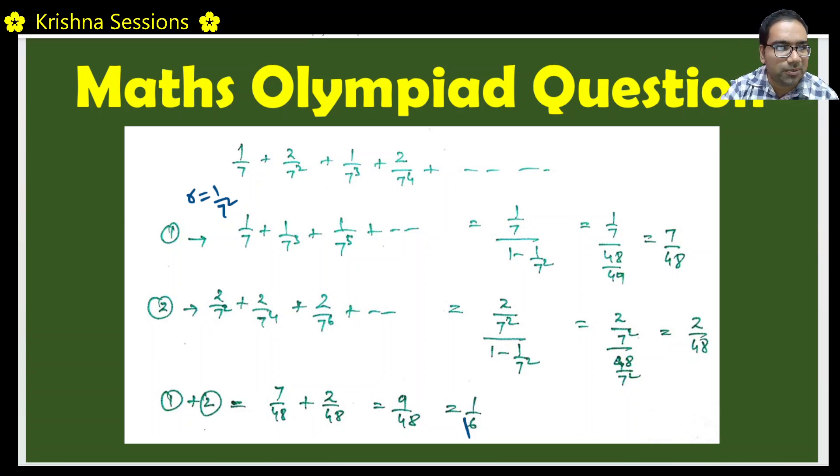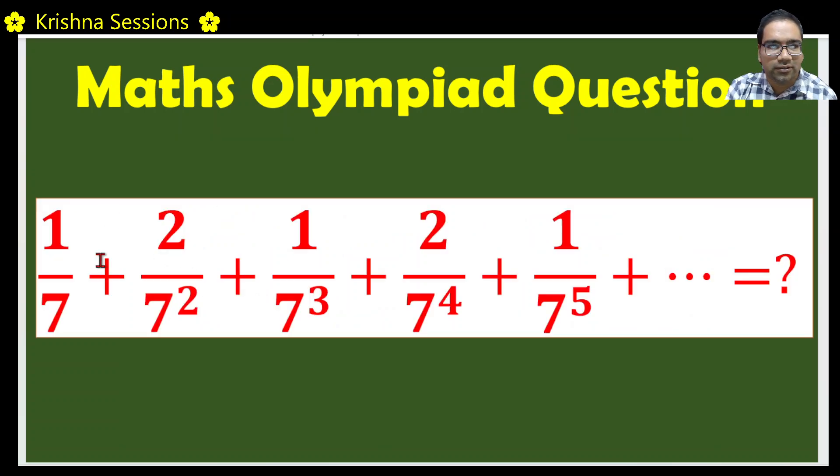Hope you understood this. This is a simple problem. We just need to split into two different series and then sum them and then do the summation basis normal geometric series formula. Hope you guys understood this. Any doubts? Please comment. Thank you guys.